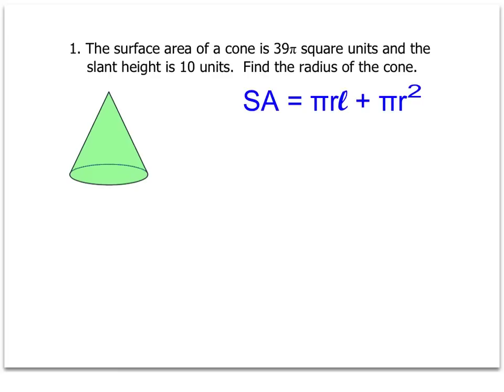So if you don't know where to start on these, I always start with the formula. We know that we're talking about the surface area of a cone, so I brought up the formula. Surface area equals pi r L plus pi r squared.